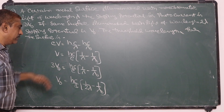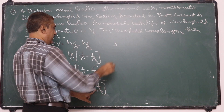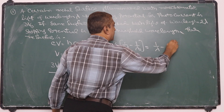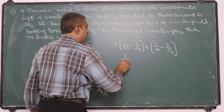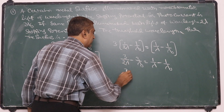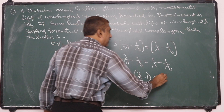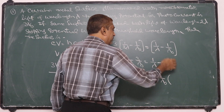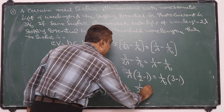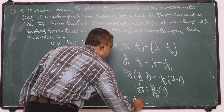Dividing these two equations: 3(1/2λ - 1/λ₀) = (1/λ - 1/λ₀). Expanding: 3/2λ - 3/λ₀ = 1/λ - 1/λ₀. Rearranging: 3/2 - 1 = (3-1)/λ₀ · λ, which gives 1/λ₀ = 1/(4λ), so λ₀ = 4λ.